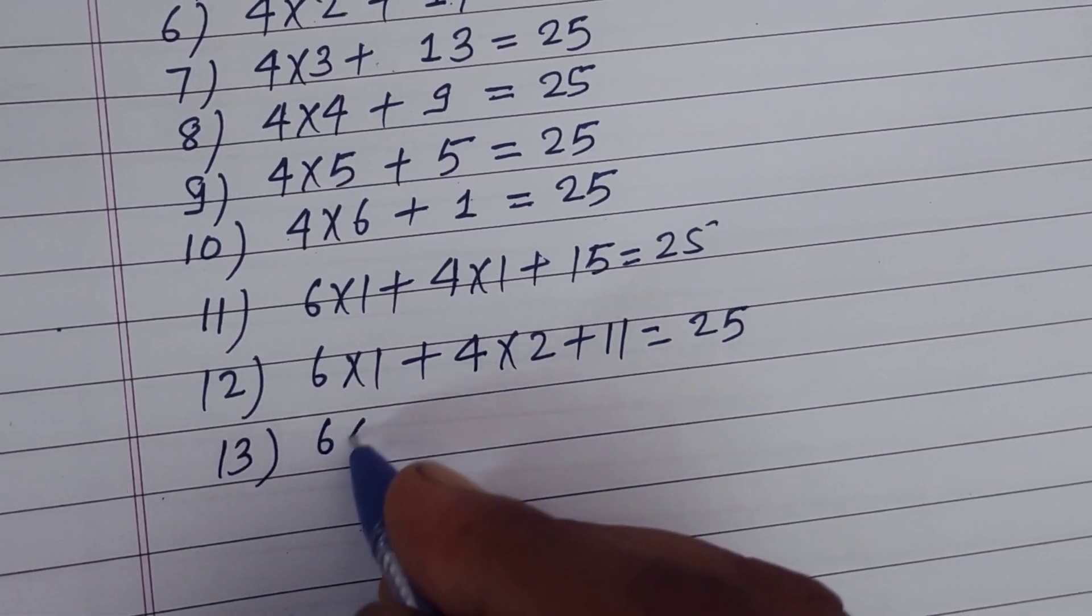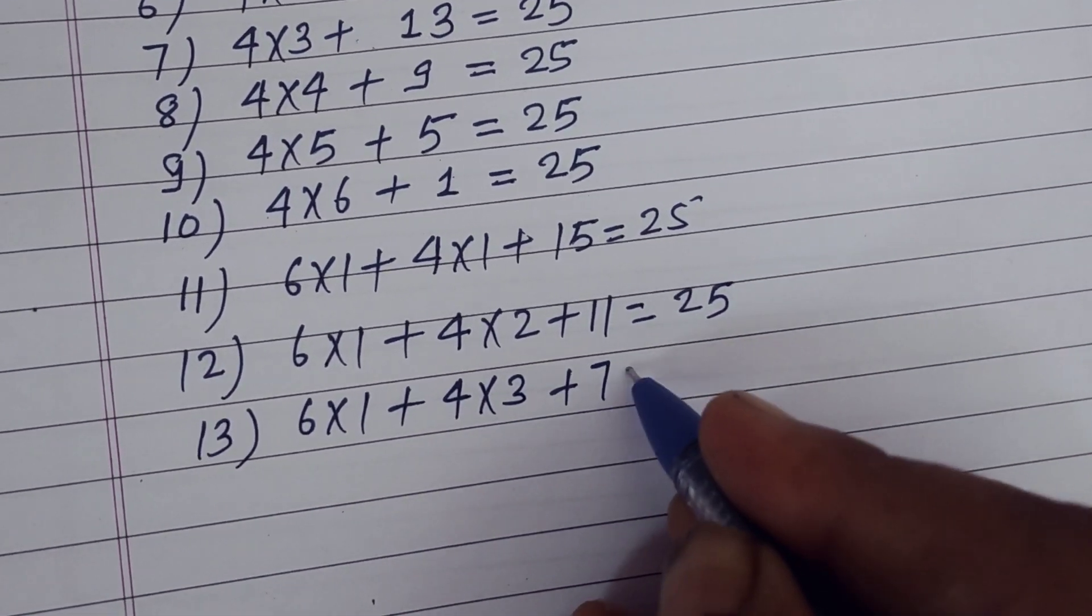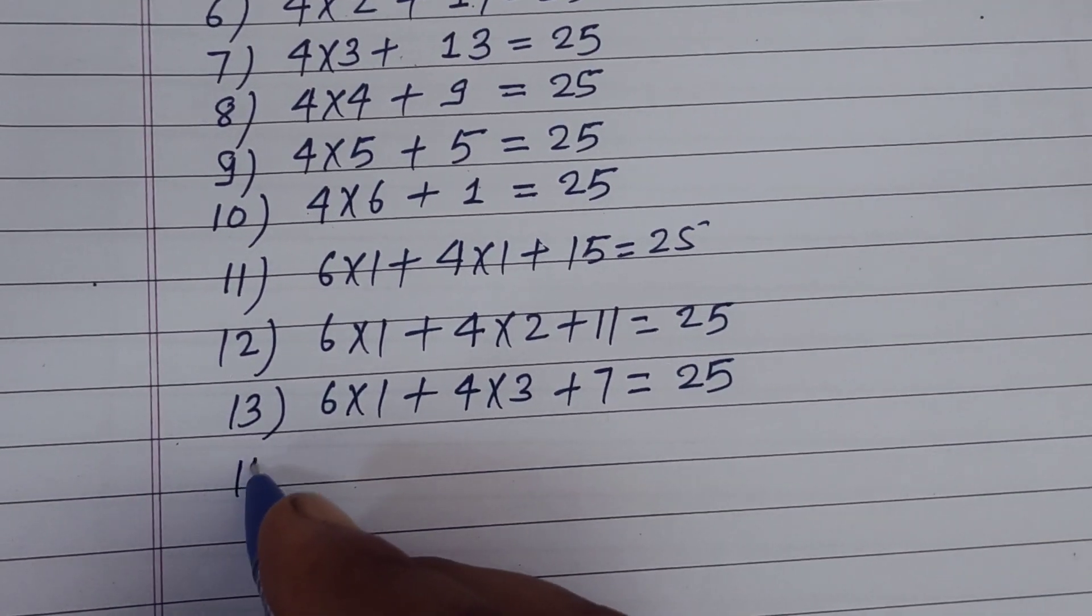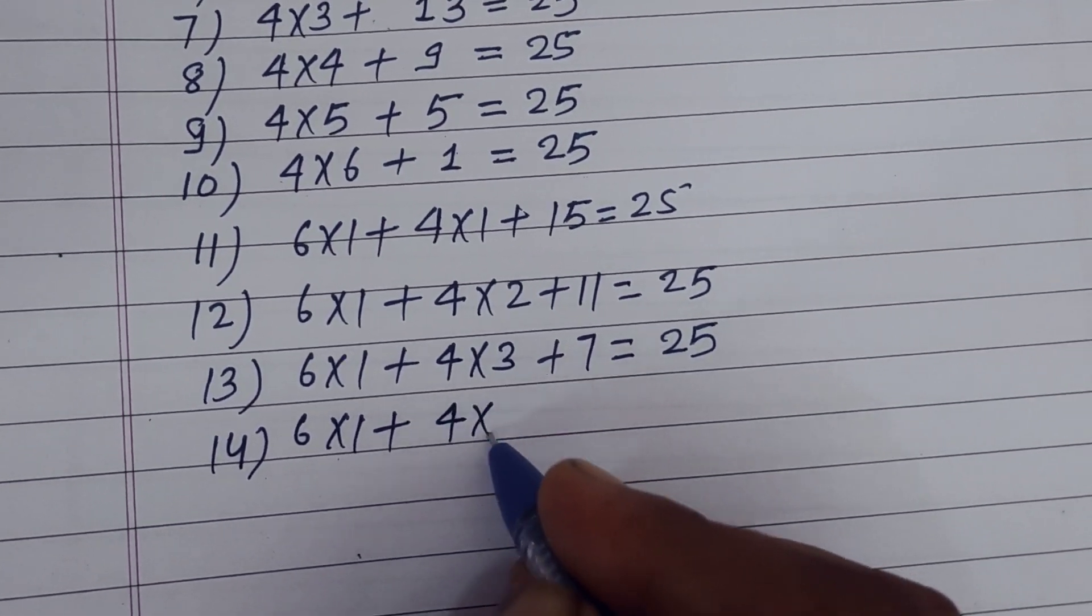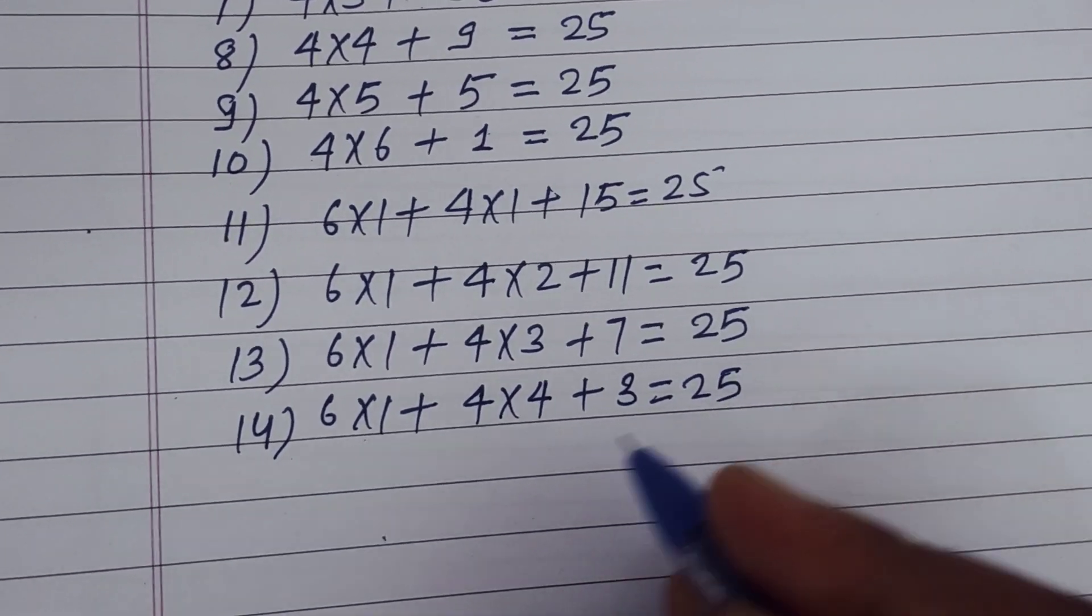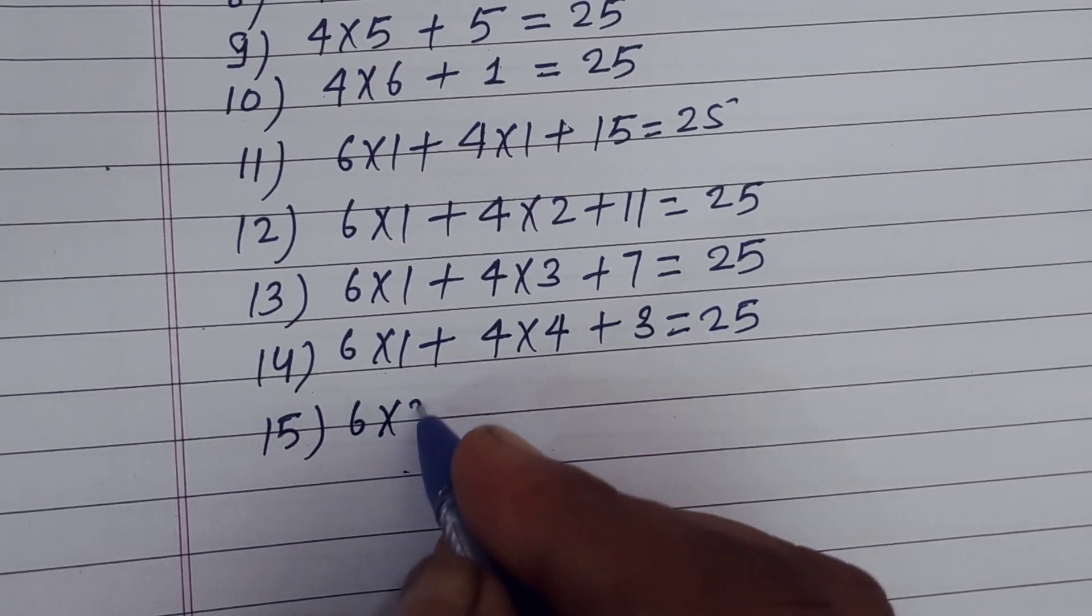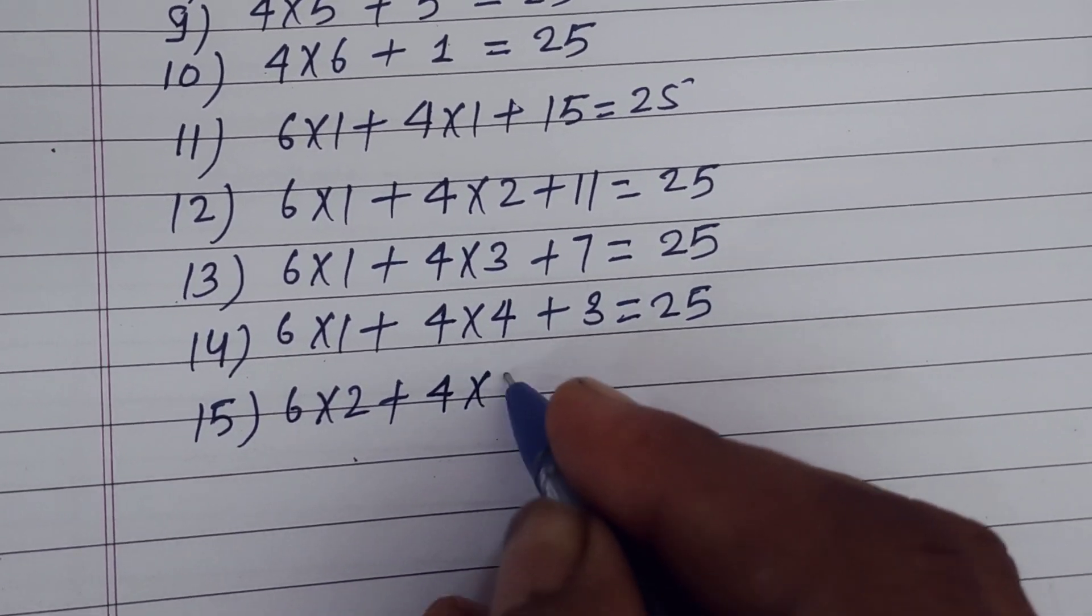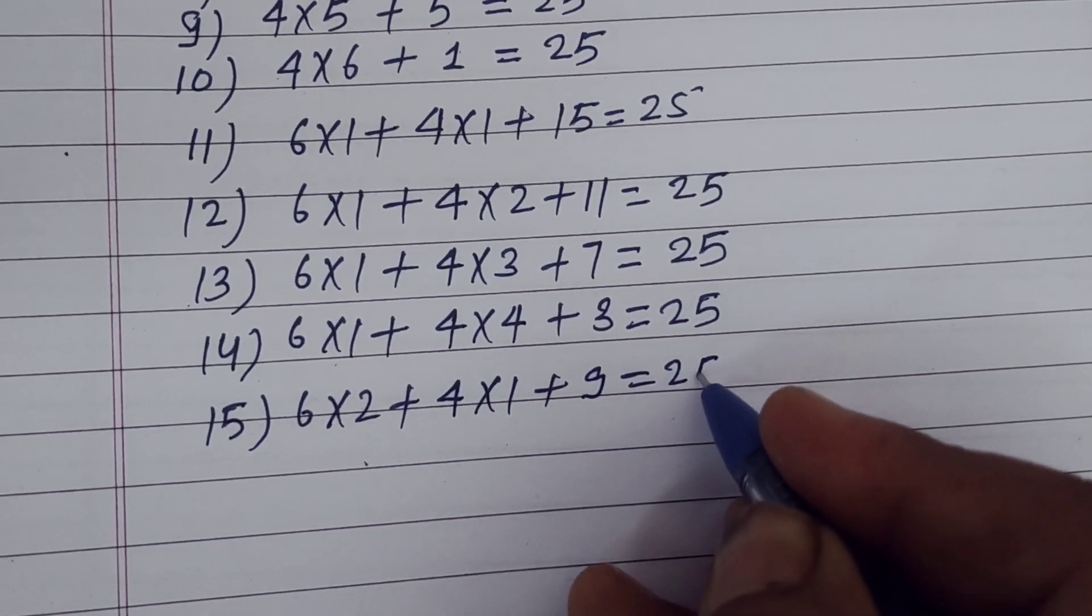13th condition is 6×1, 4×3 plus 7 single, also 25. 14th condition is 6×1, 4×4 plus 3 single, this is also 25. 15th condition is 6×2, 4×1 plus 9, this is also 25.